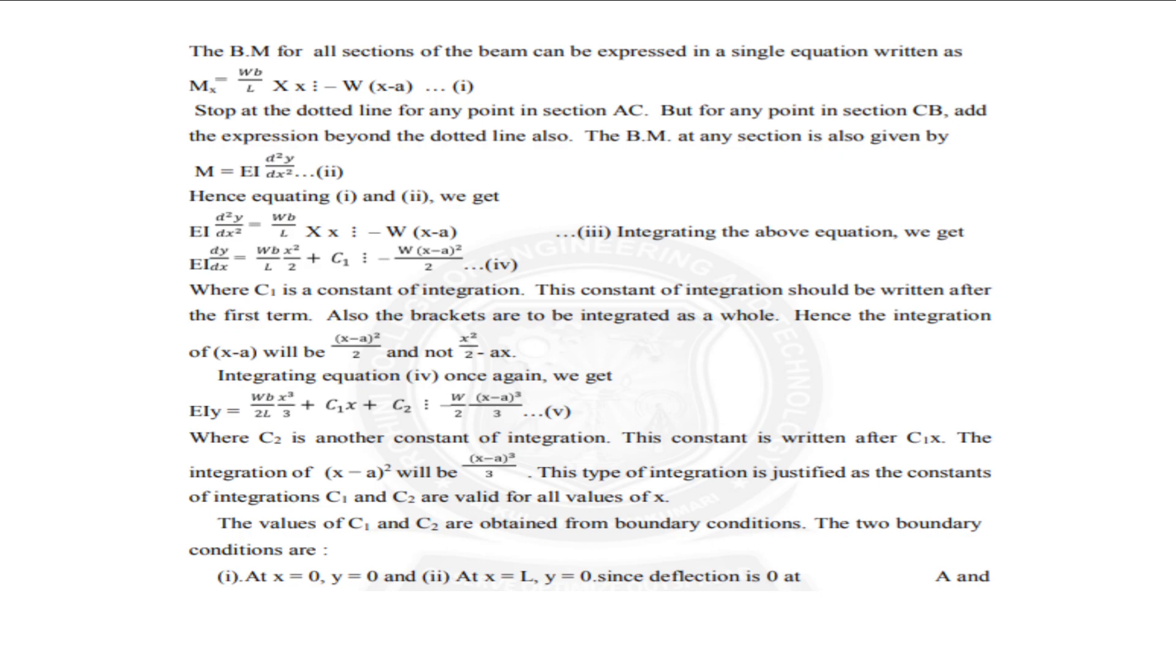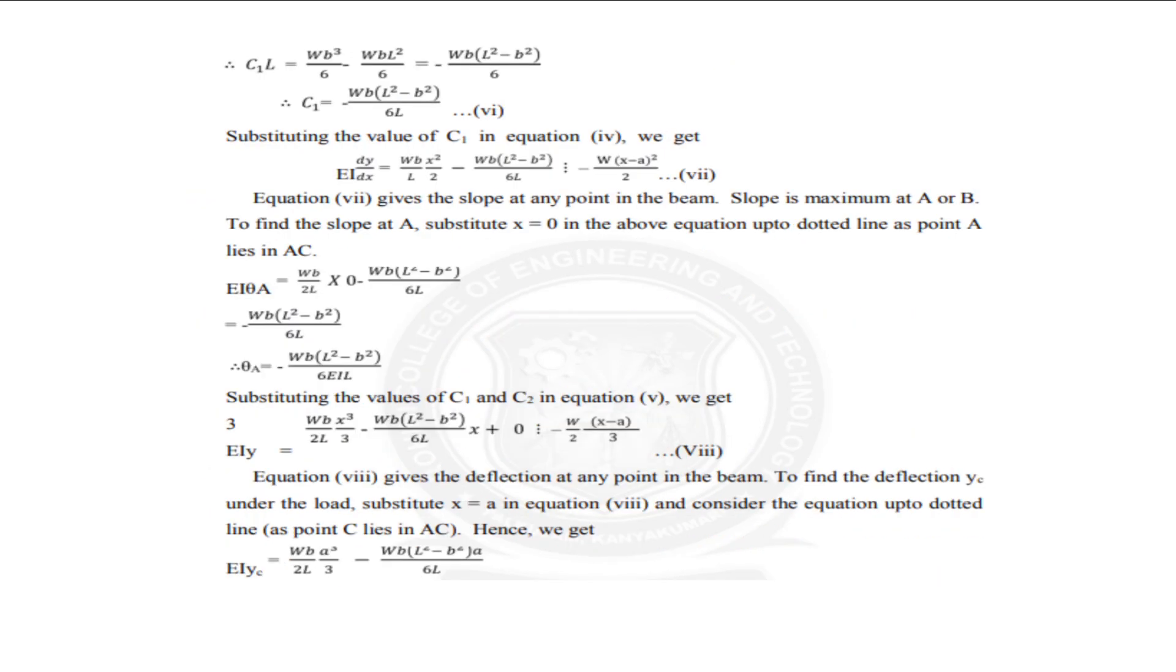So for finding C2 and C1 we want to know the boundary conditions. The first one is at X equals 0 Y equals 0 and second boundary condition is at X equals L Y equals 0, since the deflection is 0 at A and B. So here by using these boundary conditions we are getting the equation 7th equation EI by Dx equals WB by L into X square by 2 minus WB into L square minus B square by 6L minus WX into X minus A the square divided by 2 that is the 7th equation.